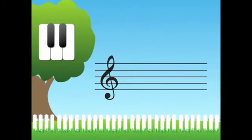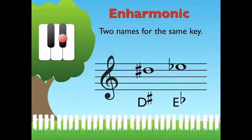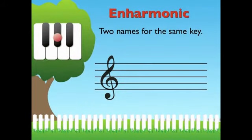So we can have two names for the same key. That's called enharmonic. Can you think of two names for this black key? We could call it D sharp, or we could call it E flat. Those are called enharmonic notes. Here's another example. We could call this key G sharp, or we could call it A flat.